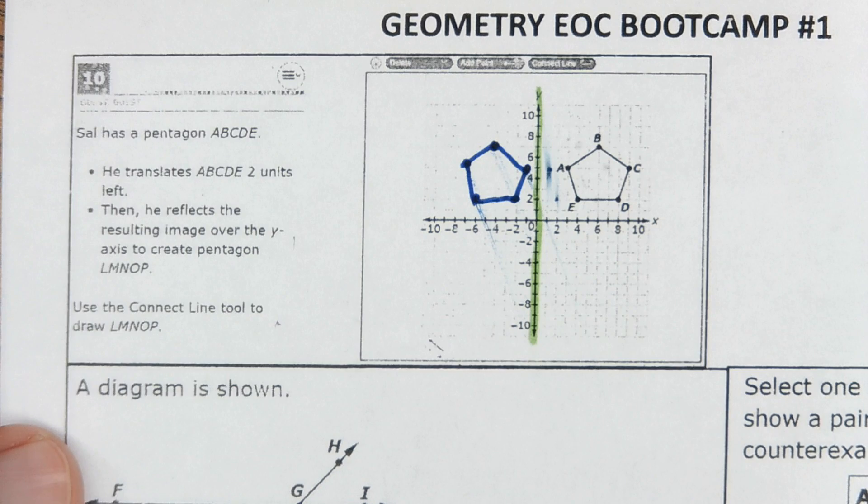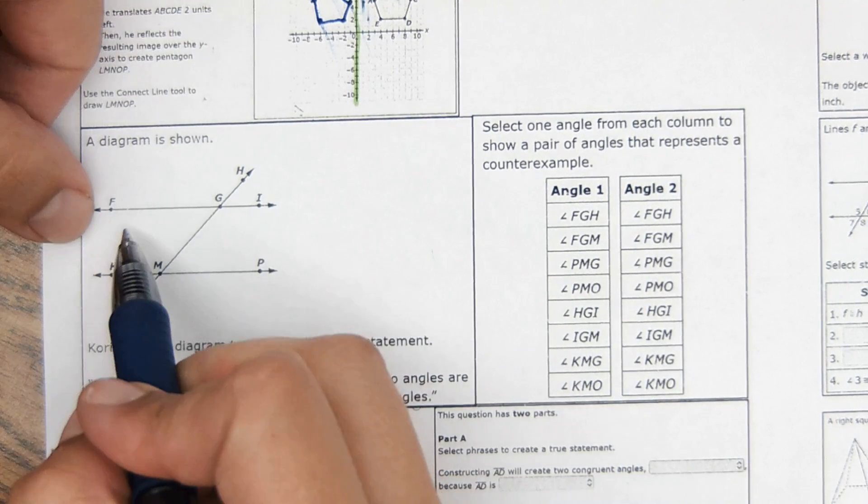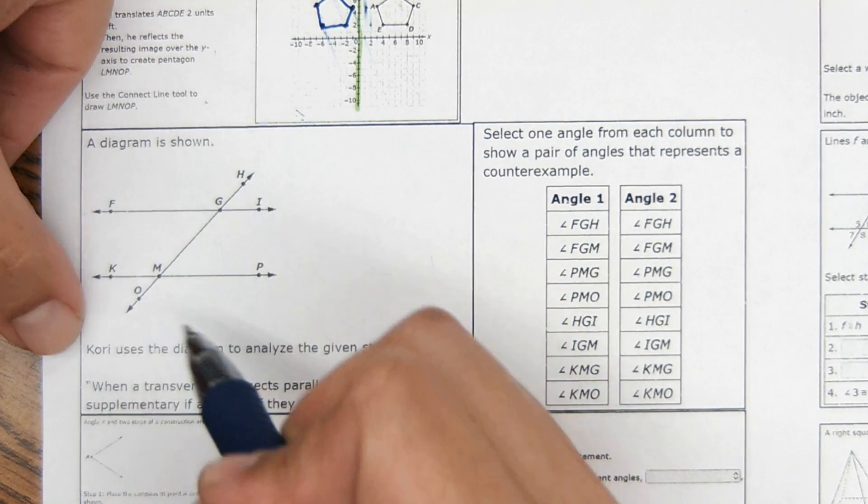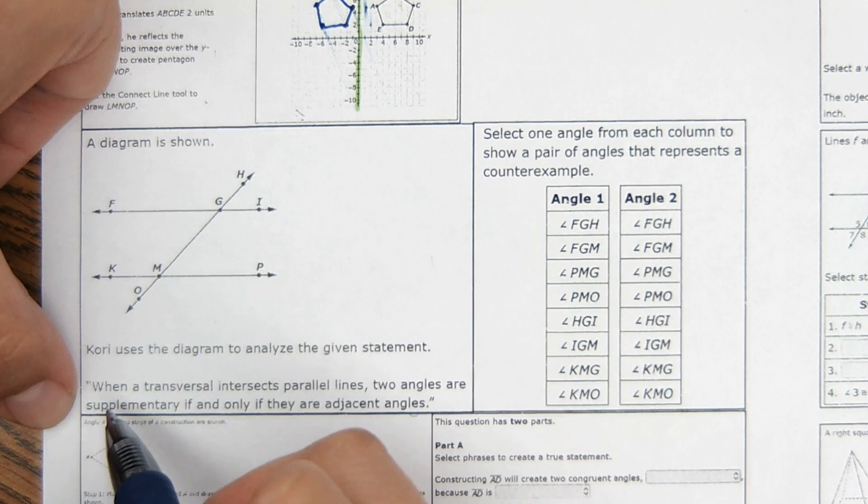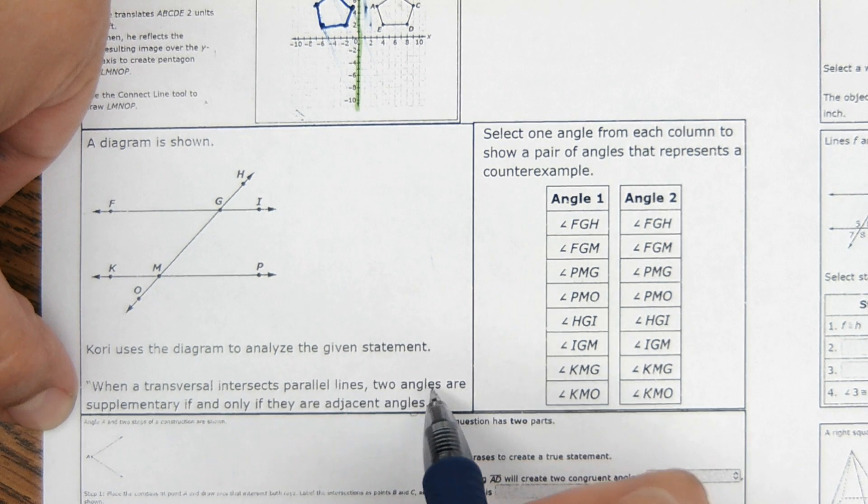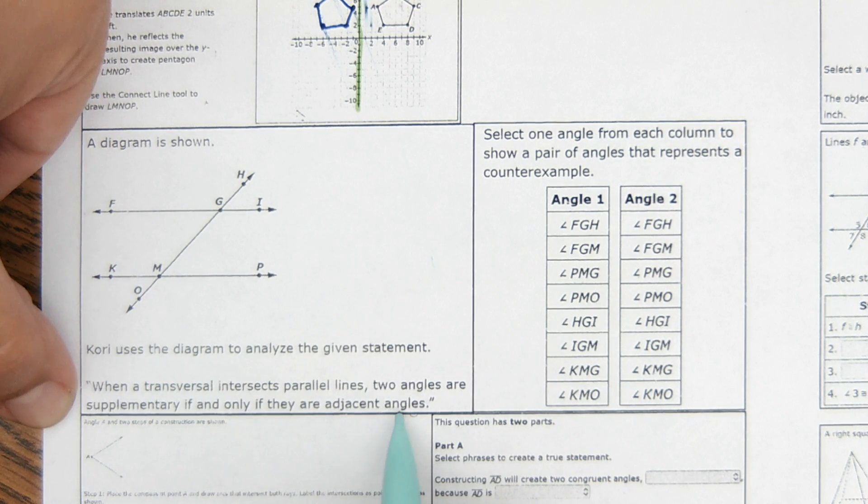Okay, ready for the next one? I'm going to zoom out for this one so we can see the whole problem. Okay, this one, a diagram is shown, as you can see, parallel lines and a transversal. Corey uses a diagram to analyze the given statement. It says when a transversal intersects parallel lines, two angles are supplementary if and only if they are adjacent angles.